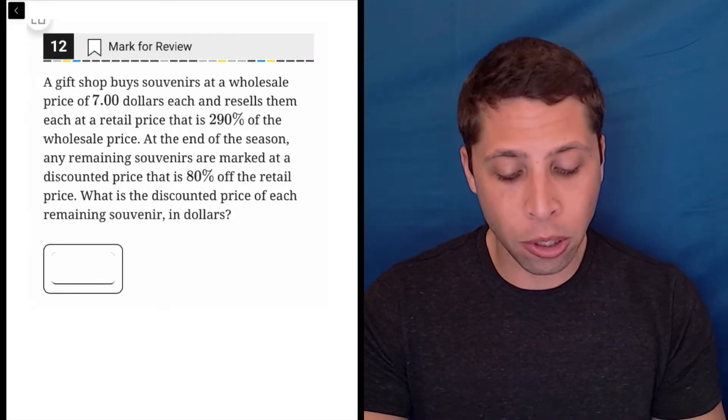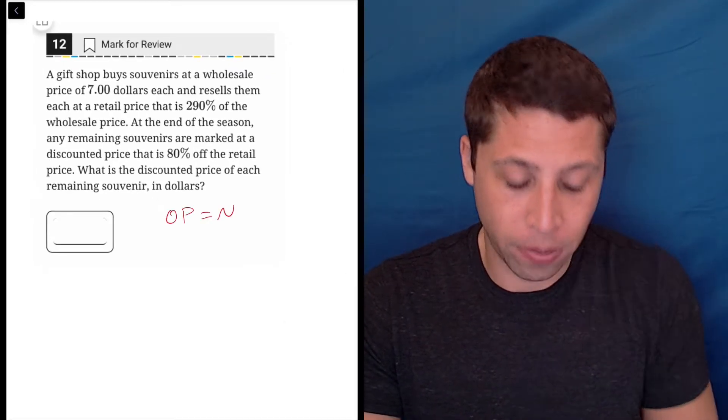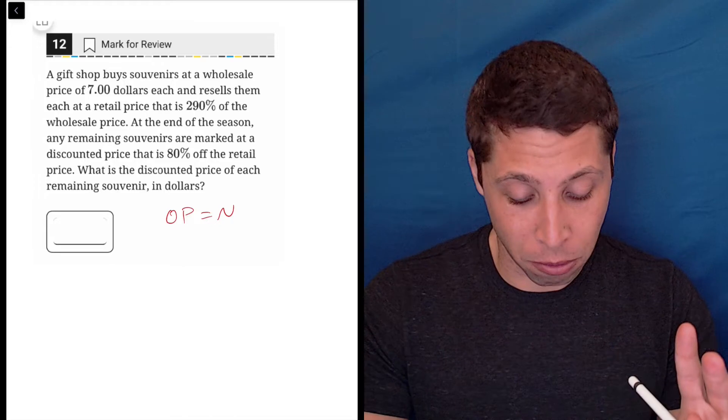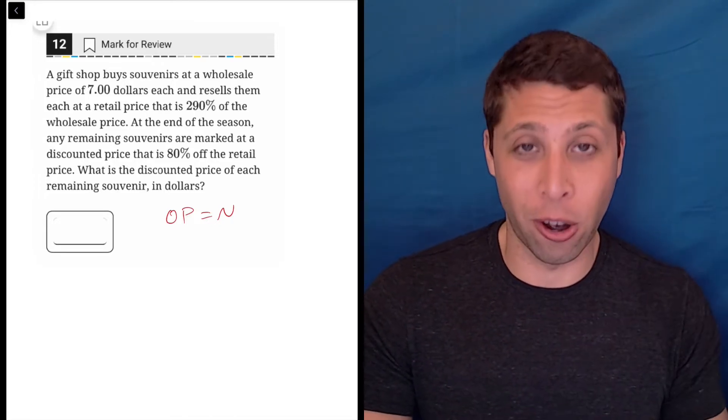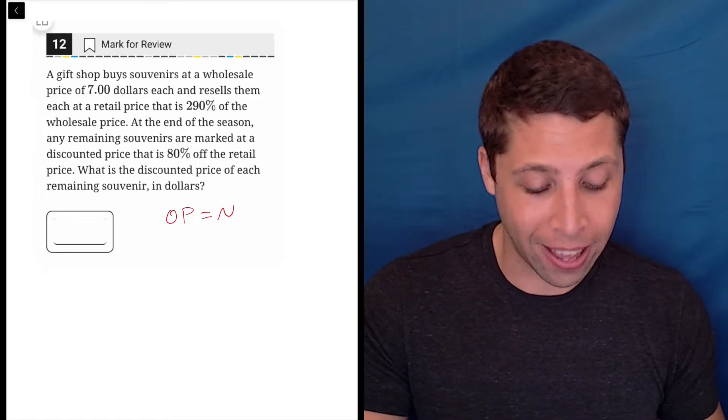It's percentages, so I'm going to use what I call the open formula. Now there are two versions of the open formula. There's one that looks like the word open, which is why it's called the open formula. O times P, the E kind of is an equals, and then N.